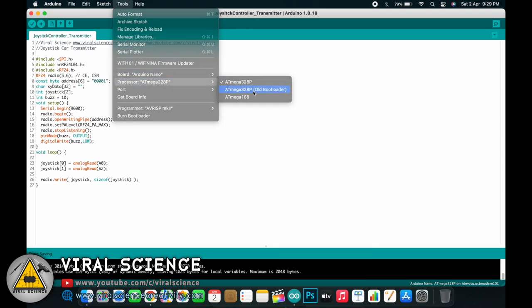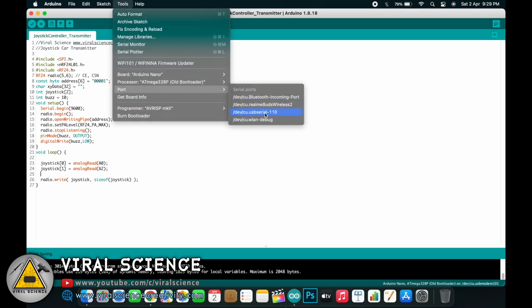So select the board, that is Arduino Nano, select old bootloader, select the port and upload the code.